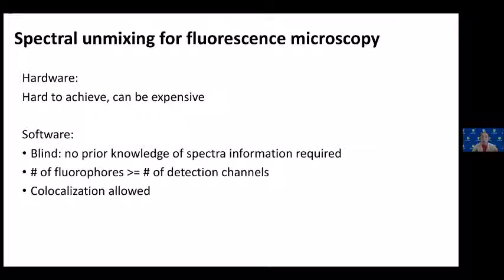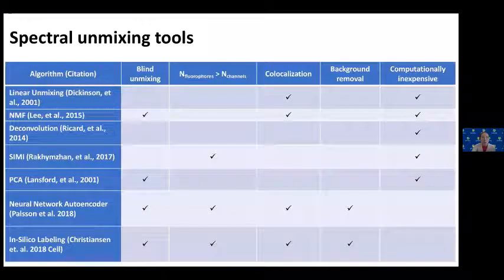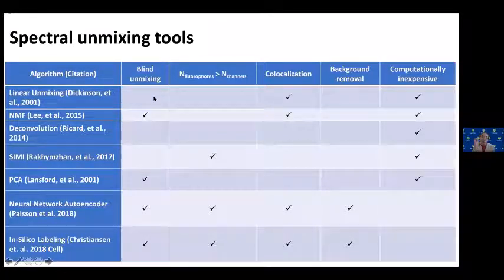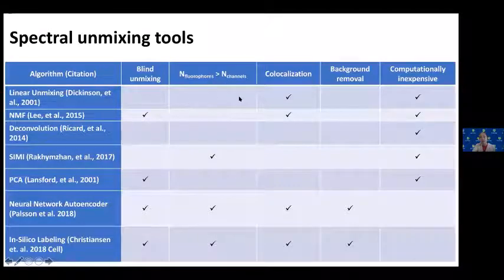Third, co-localization must be allowed — two fluorophores can label the same structure and show up in the same pixels, which is very common in biology studies since biologists often evaluate co-localization. The unmixing tool cannot fail when co-localization is happening in the sample. Lastly, it needs to be computationally light because this is just the first step of post-processing, so we don't want it to be very time-consuming or require a lot of computational effort.